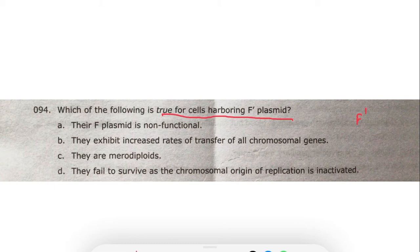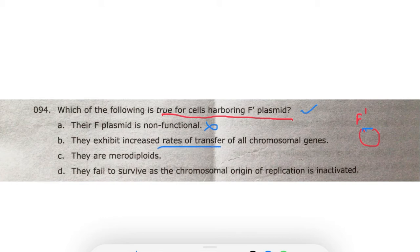The F' plasmid is that plasmid which contains the complete F factor and a portion of chromosomal gene — that is known as F'. The question asks: which of the following is true for cells harboring F' plasmid? Option: F' plasmid is non-functional — no, this is wrong. They exhibit increased rates of transfer of all chromosomal genes — no, because it contains only a partial chromosomal gene, not all. So this is also wrong.